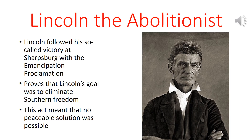Shortly after claiming his little victory at Sharpsburg, Lincoln issued the Emancipation Proclamation, which said that all slaves in the Confederate States were now free men. This more or less proves that all of the South's fears going into the war were correct and that Lincoln actually was an abolitionist — the only real difference between Lincoln and John Brown being that Brown was a crazy person while Lincoln was a calculating and sophisticated opponent of the South. Once the Emancipation Proclamation was issued, there was no chance of a negotiated peace. Lincoln really was a terrible diplomat in addition to being a radical abolitionist.